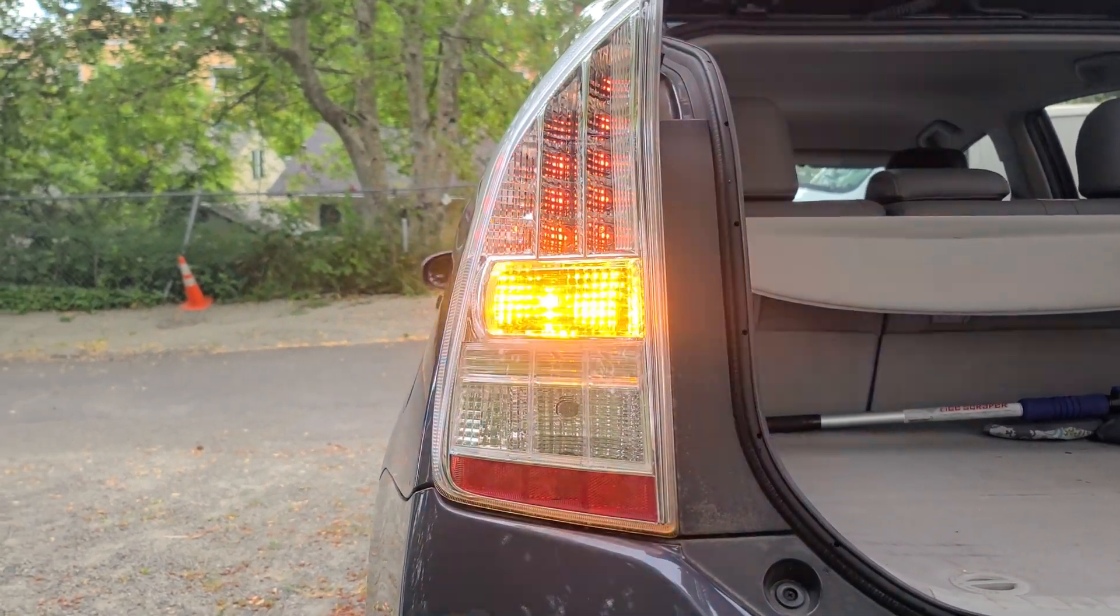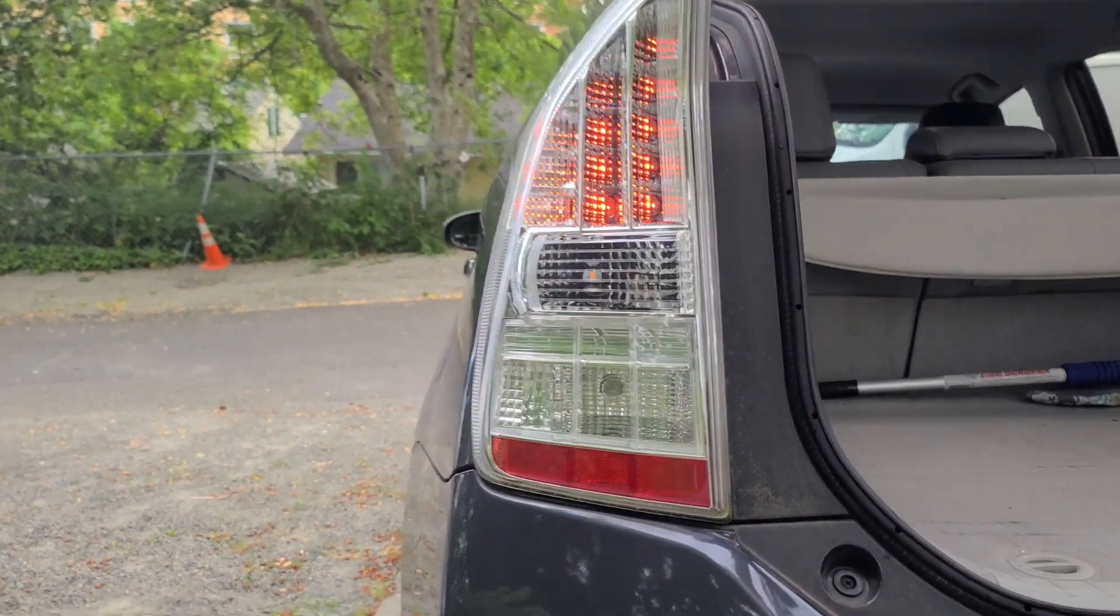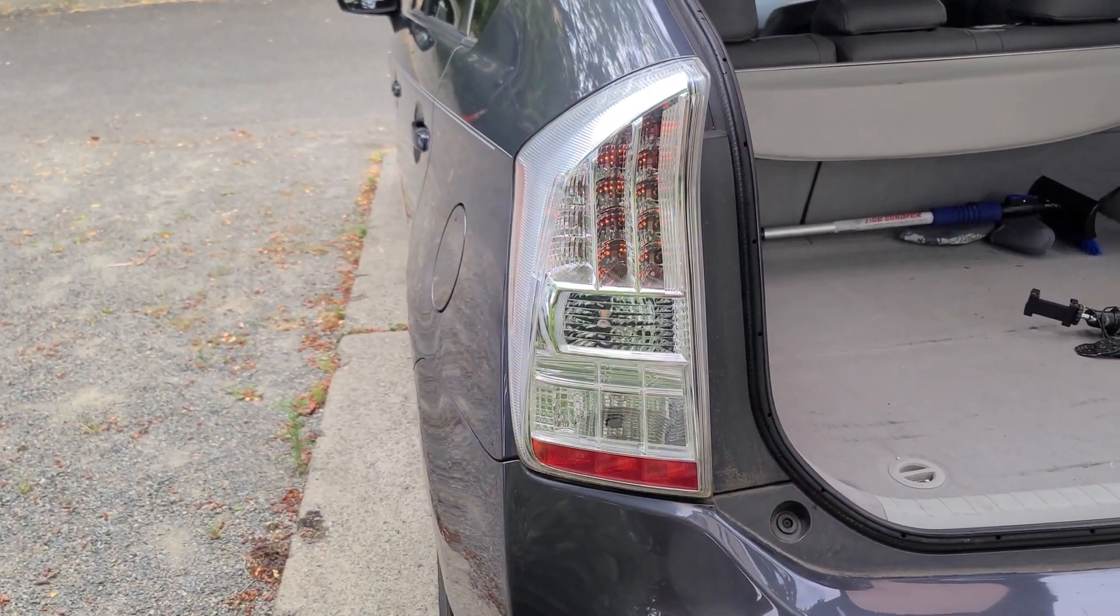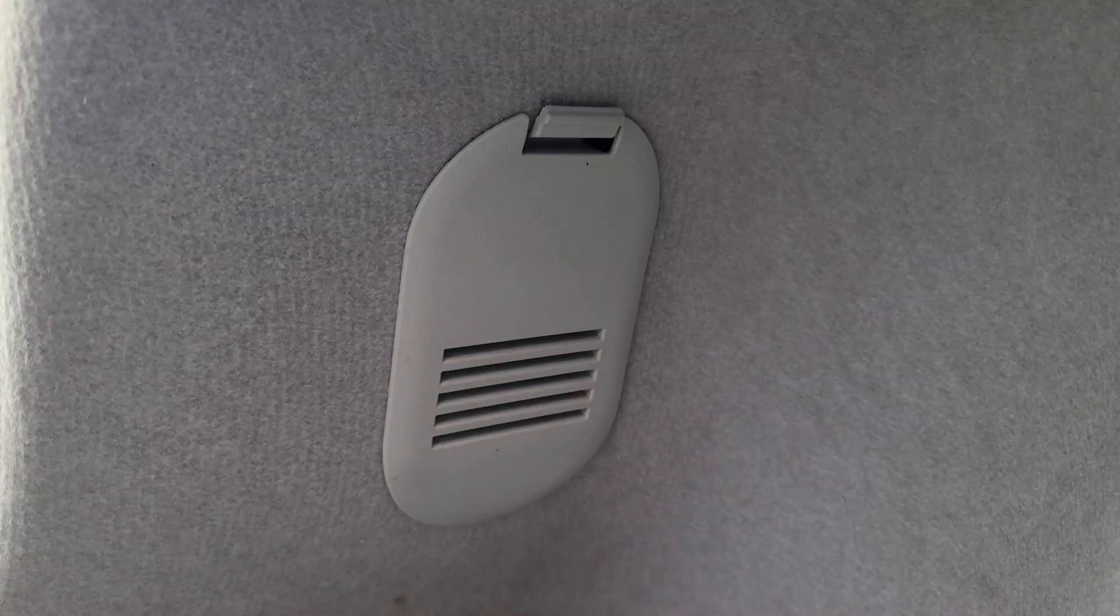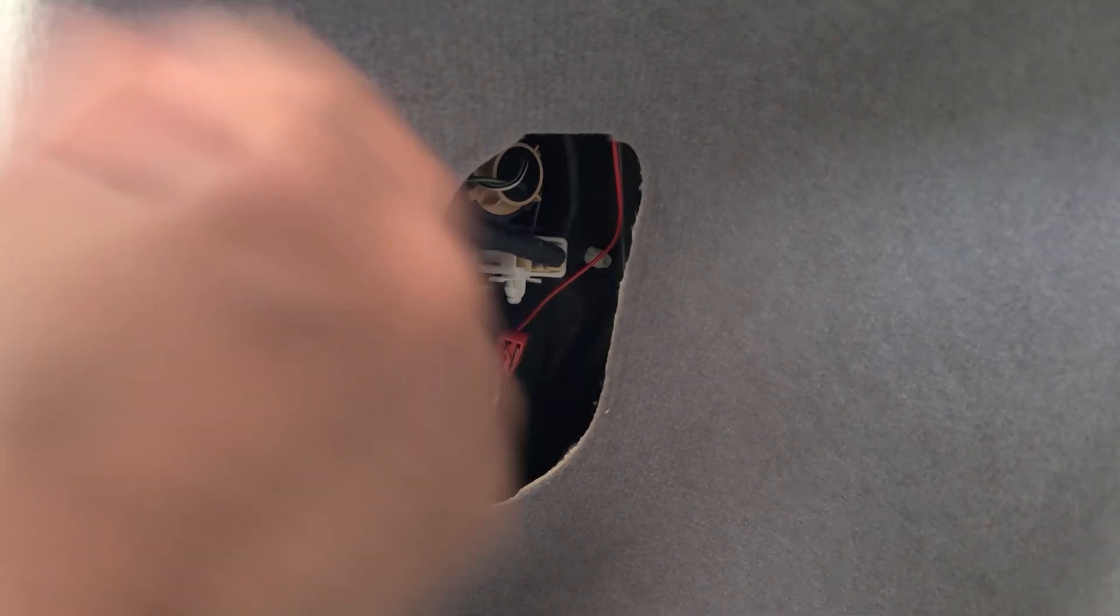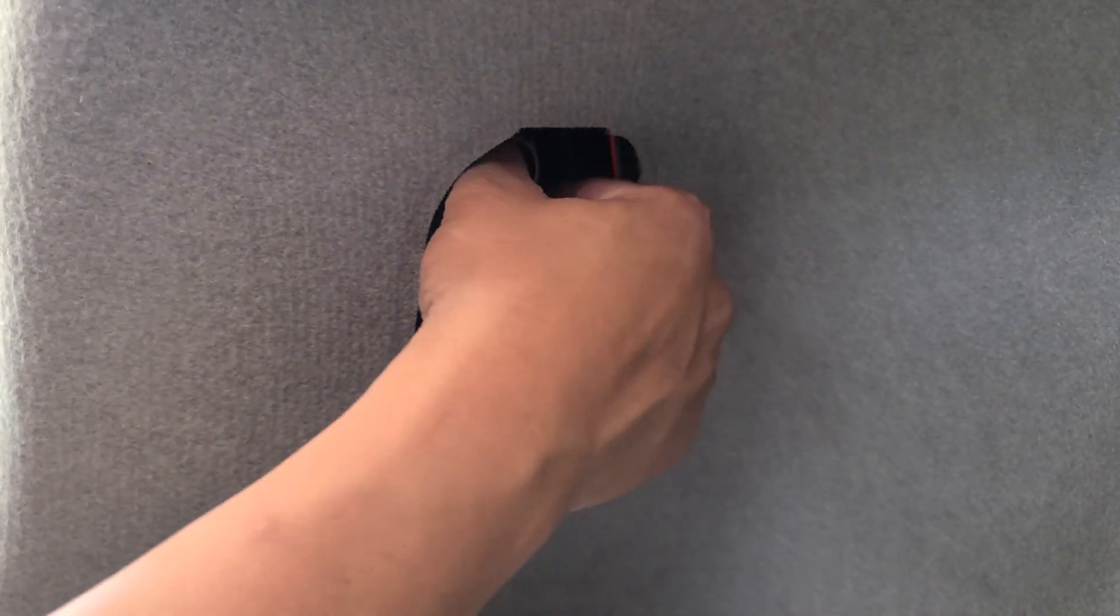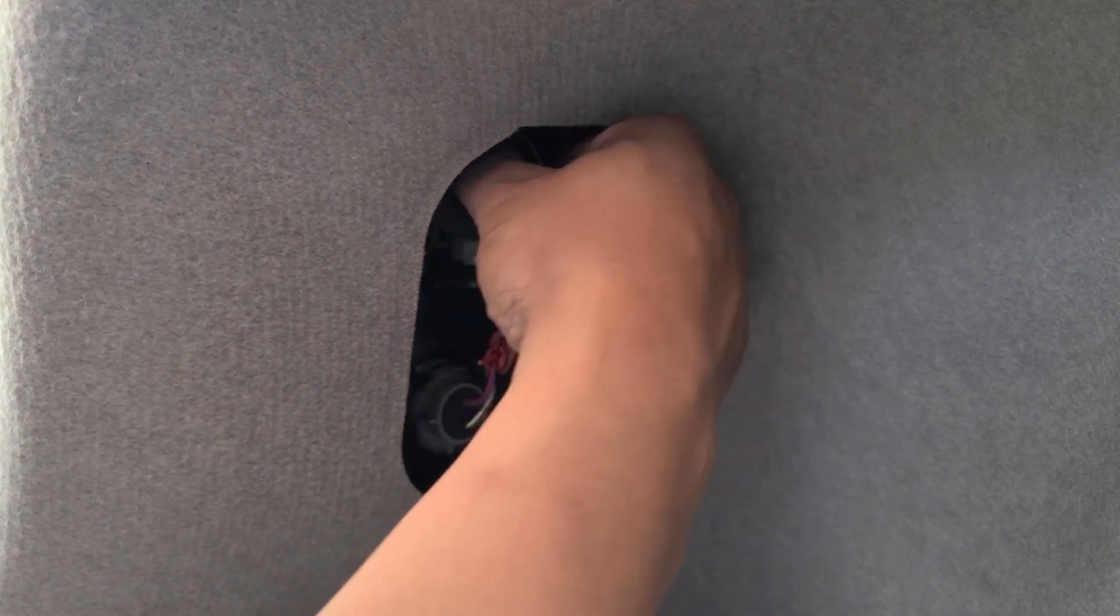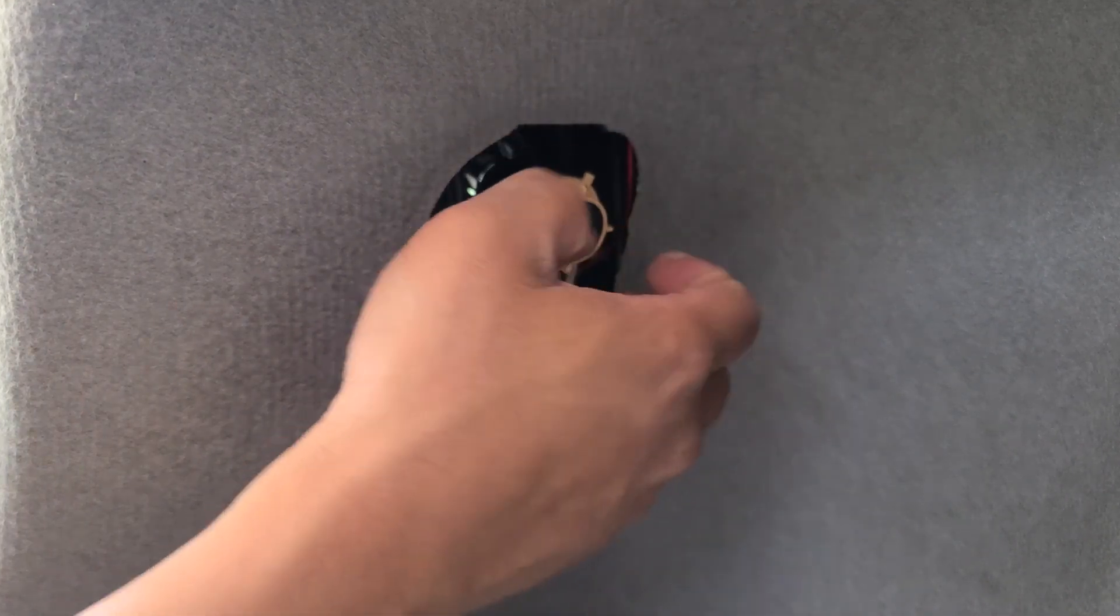As you can see, it's hyper flashing. So now you want to go ahead and pull the cover back and locate your signal bulb, which is this one up here for the Toyota Prius. Twist counterclockwise and pull it out.